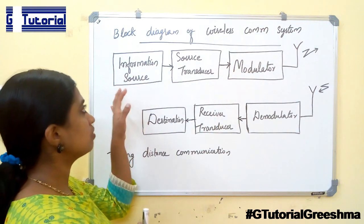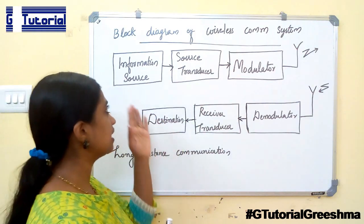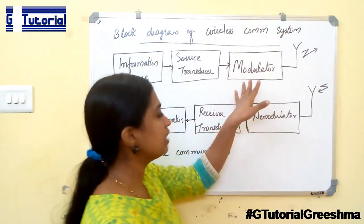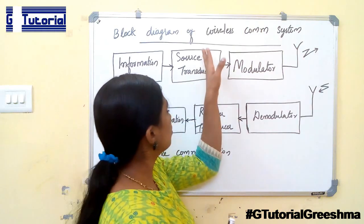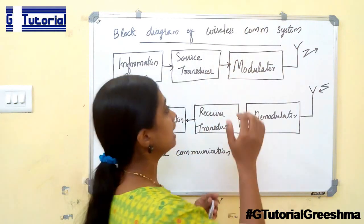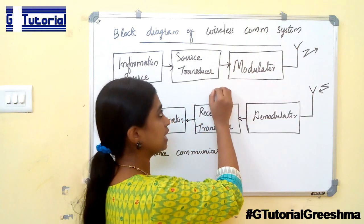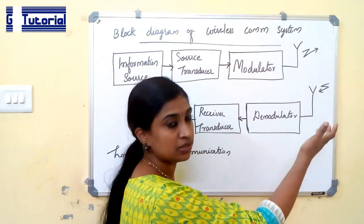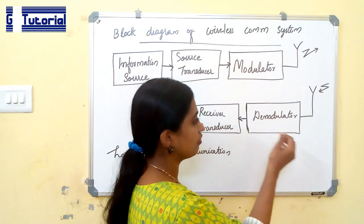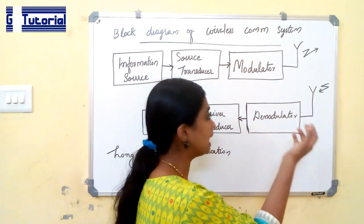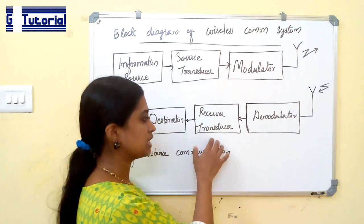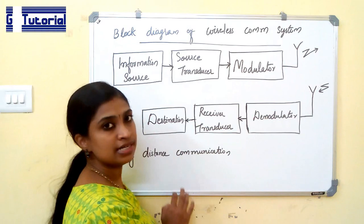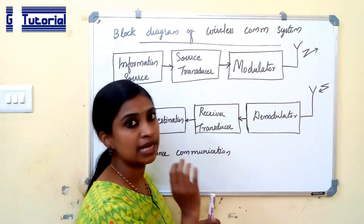The information source produces information, and the source transducer converts the physical signal to an electrical signal. The modulator is a new block that occurs only in a wireless communication system. It converts the low-frequency signal at the output of the source transducer to a higher frequency, and that high-frequency signal is transmitted. At the receiver, the original low-frequency signal is demodulated from the received signal, then fed to the receiver transducer which converts it to the physical signal, and finally it reaches the destination.